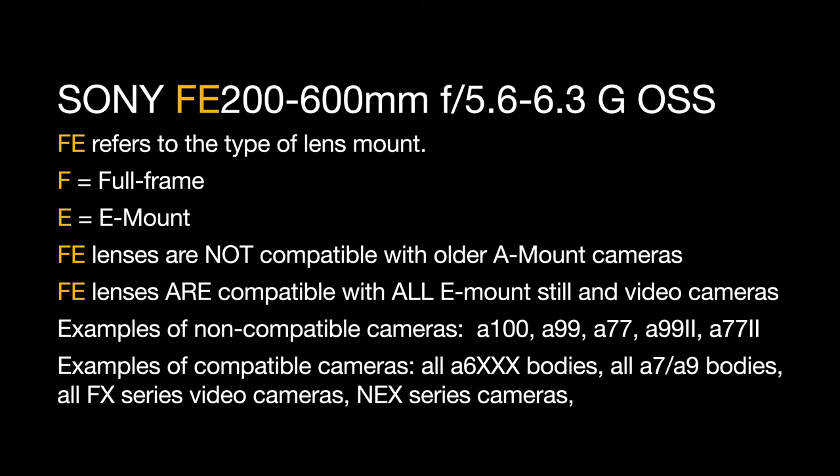FE lenses are not compatible with older A-mount cameras. FE lenses are compatible with all E-mount still and video cameras. Examples of non-compatible cameras would be the A100, the A99, A99-2, A77, A77-2, and so on. Examples of compatible cameras would be all the A6000 bodies, all A7 and A9 bodies, the Alpha-1, all FX series video cameras, and even the older NEX series video and still cameras.